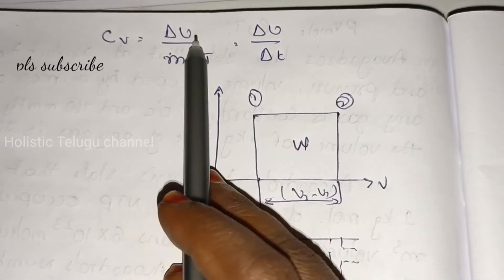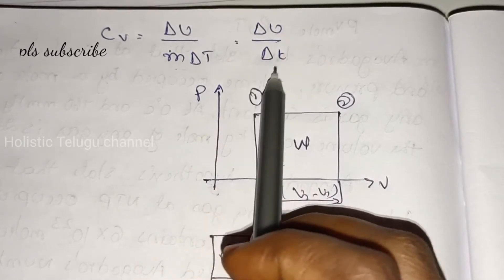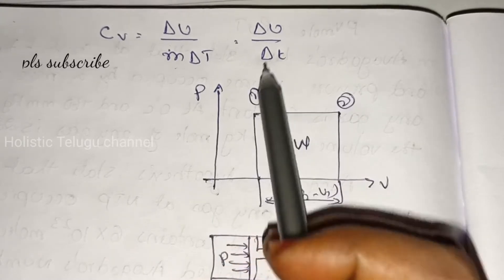So Cv equal to delta U by m delta T. That is equal to delta U by delta T, which is the change in internal energy by change in temperature.